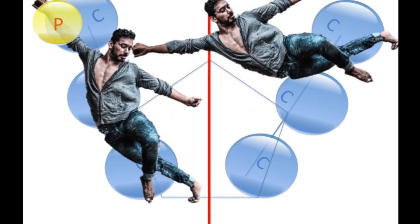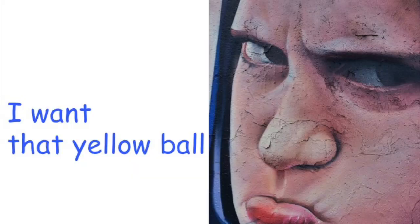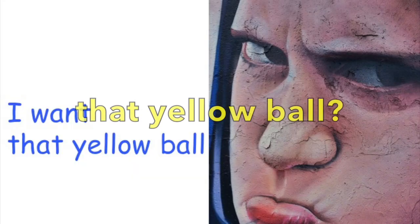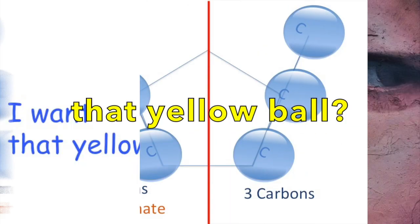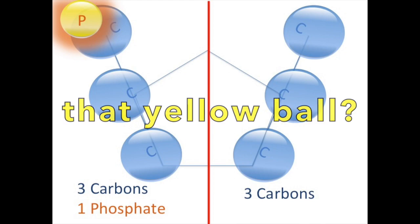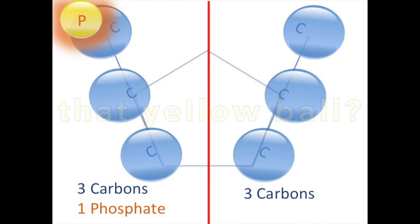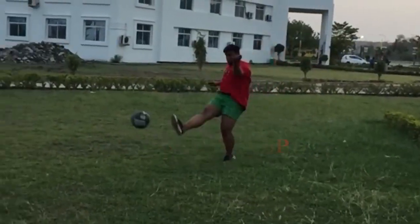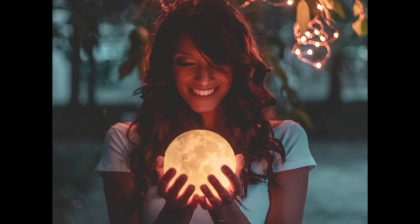Divide! What's happening? I want that yellow ball! ATP gives it another phosphate group.